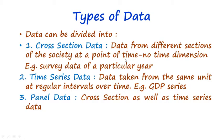In cross-section data, data from different sections of the society at a single point of time are collected, and there is no time dimension. An example is household survey data, in which different households are surveyed in a year — there are different households but a single year. So that is an example of cross-section data.